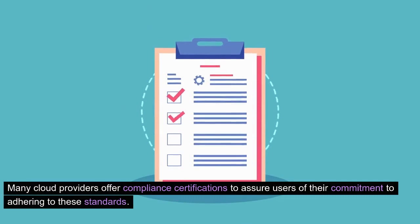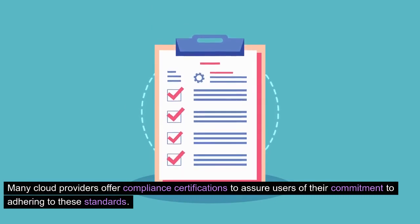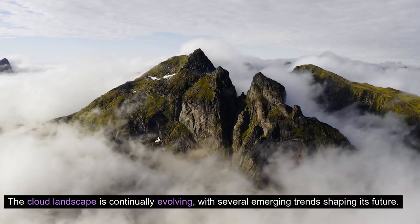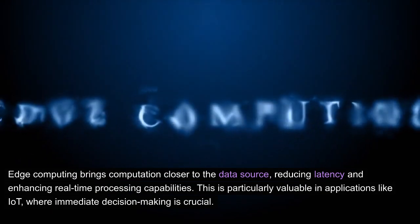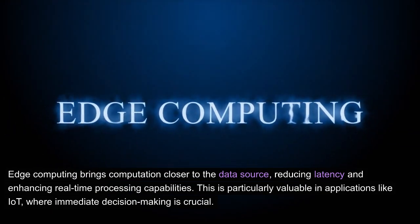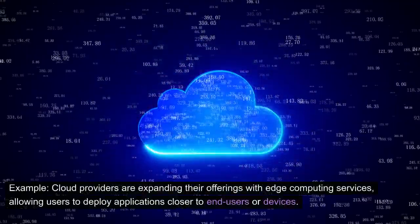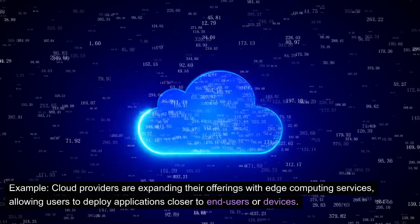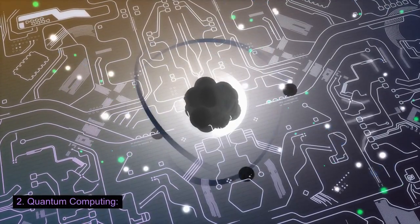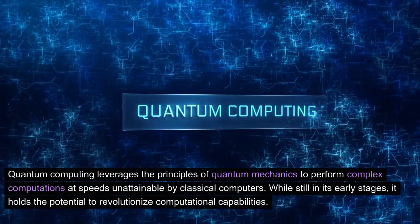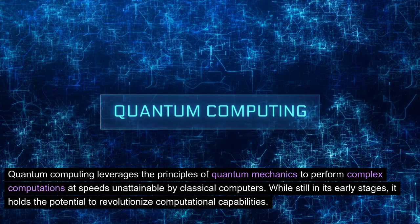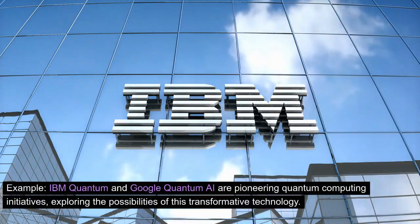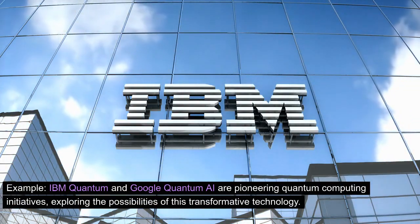Many cloud providers offer compliance certifications to assure users of their commitment to adhering to these standards. Emerging trends: The cloud landscape is continually evolving. One: Edge computing brings computation closer to the data source, reducing latency and enhancing real-time processing capabilities. This is particularly valuable in applications like IoT, where immediate decision-making is crucial. Cloud providers are expanding their offerings with edge computing services, allowing users to deploy applications closer to end-users or devices. Two: Quantum computing leverages the principles of quantum mechanics to perform complex computations at speeds unattainable by classical computers. IBM Quantum and Google Quantum AI are pioneering quantum computing initiatives, exploring the possibilities of this transformative technology.